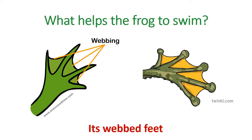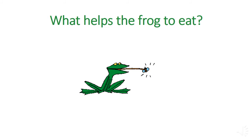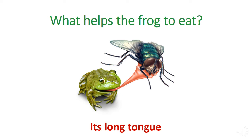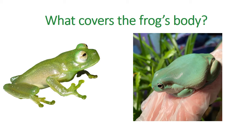Now, what helps the frog to eat? They have a very long tongue, like here. They use it to catch insects. And lastly, what covers the frog's body? Does the frog have scales? No — look at the skin, it is smooth. So they have a smooth, moist skin.